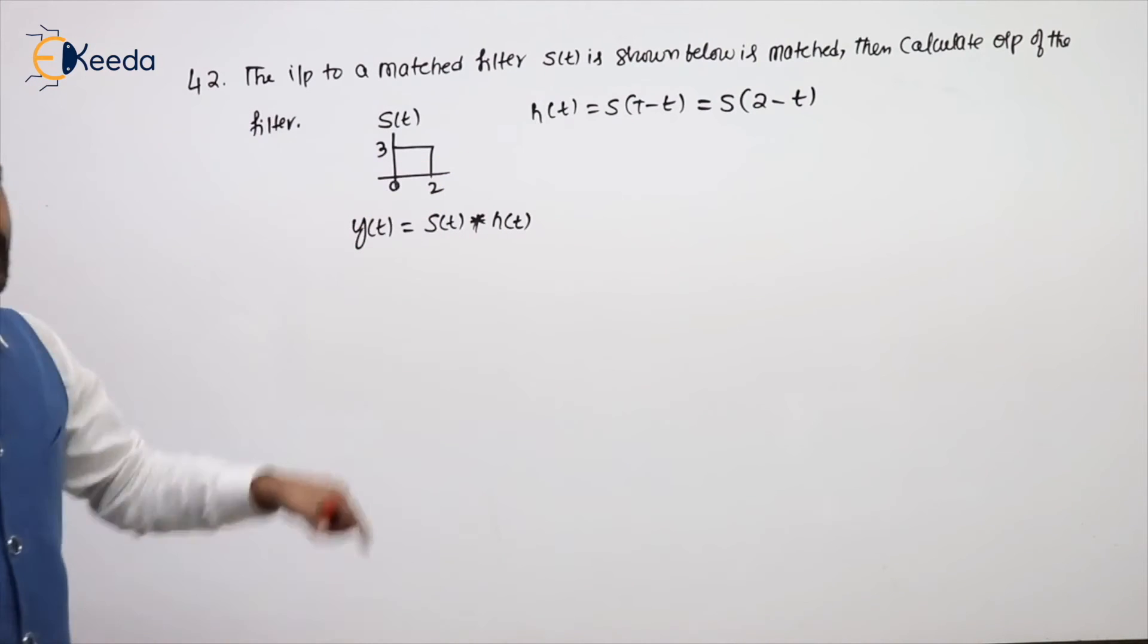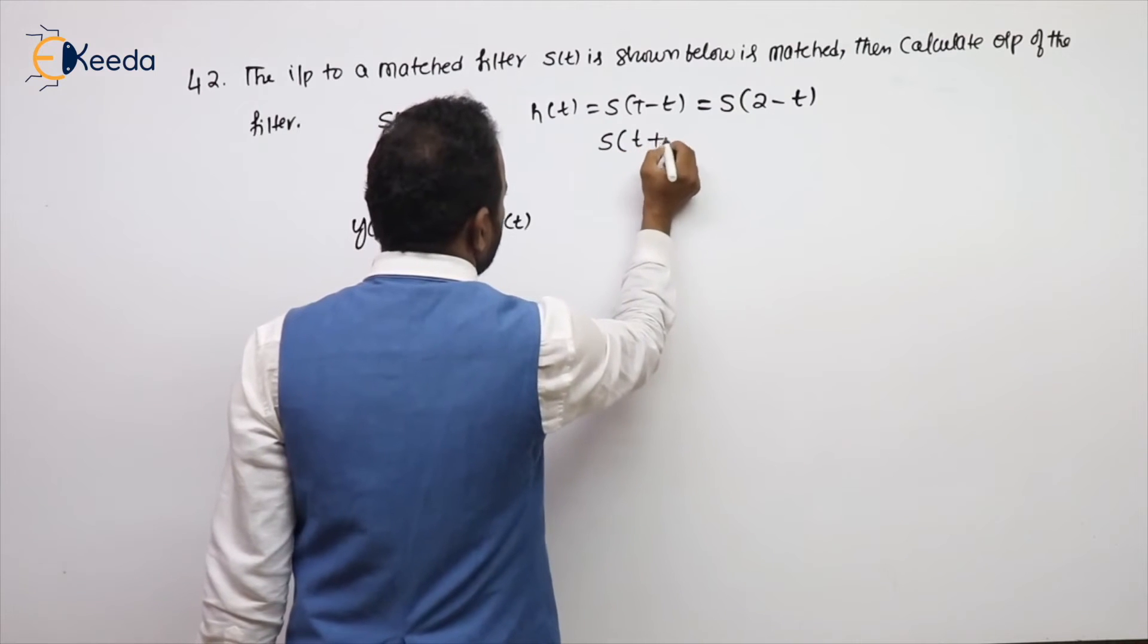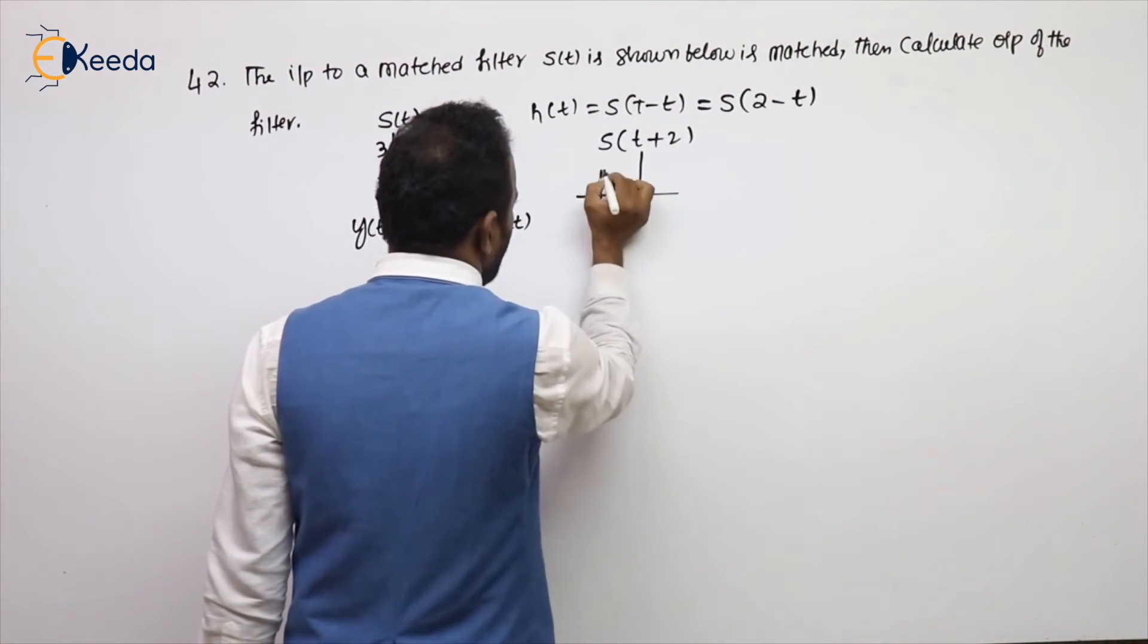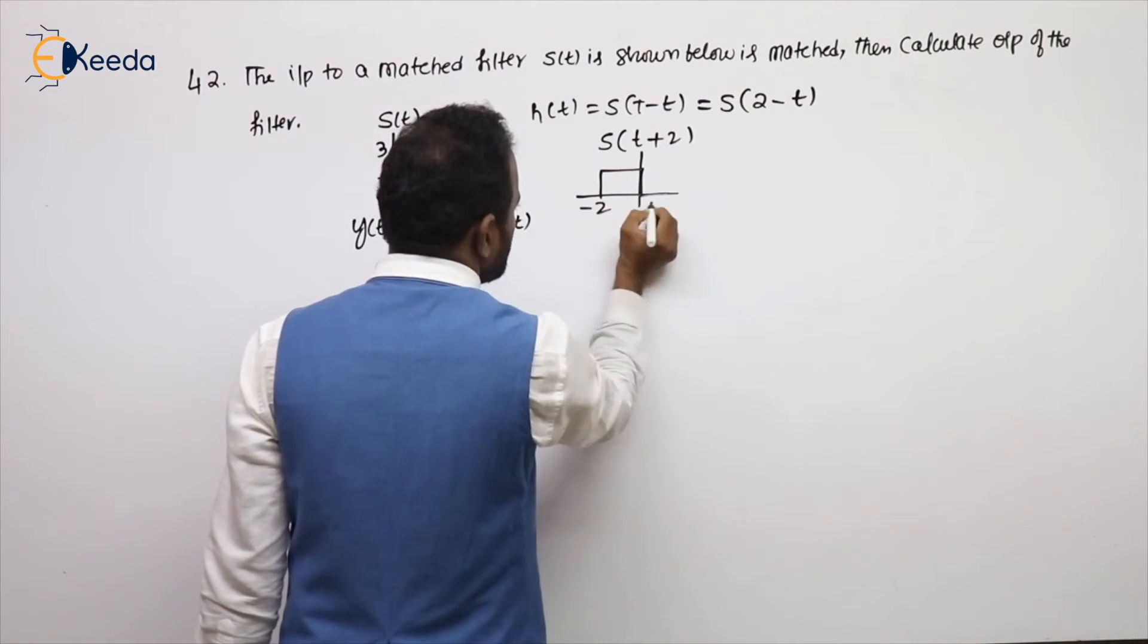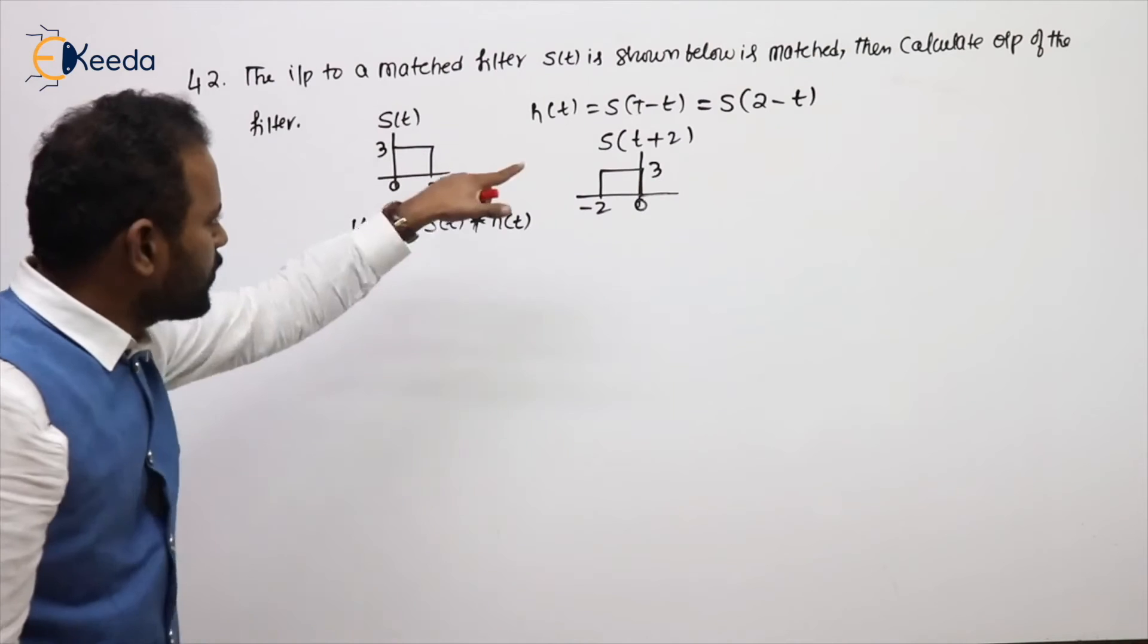S of T given, calculate S of 2 minus T. How to get? First to get S of T plus 2. How to get T plus 2? Subtract 2 from all the T values, from the signals we learned. Subtract 2 from all T values.